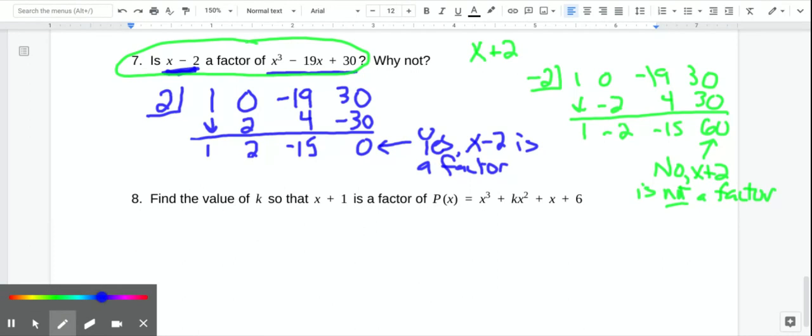All right, last problem. We want to find the value of k so that this is a factor. x plus 1 is a factor. So what we want is we want x plus 1 to divide into it evenly. We want to have a remainder of 0. That's what we're looking for.